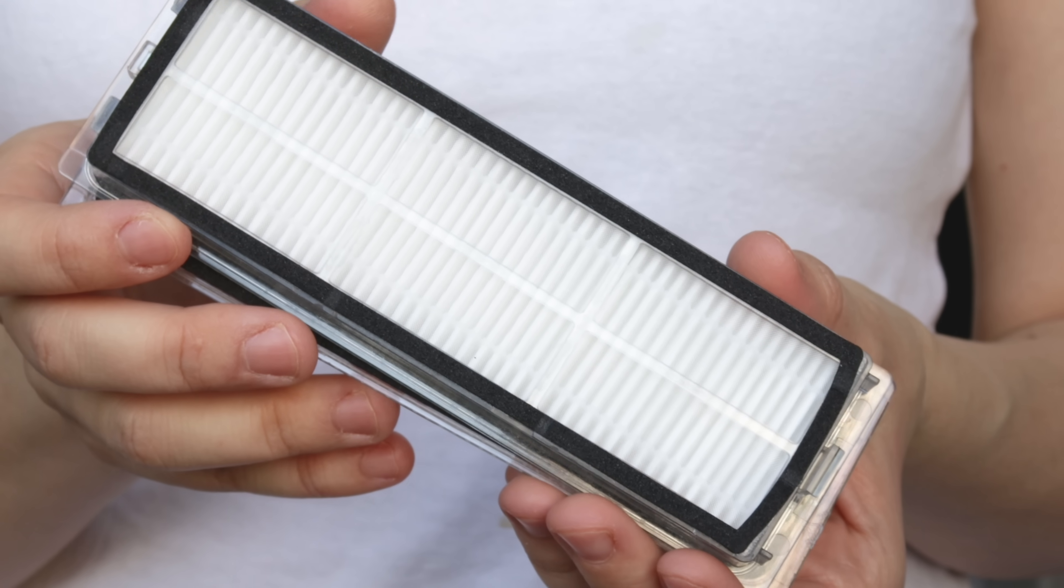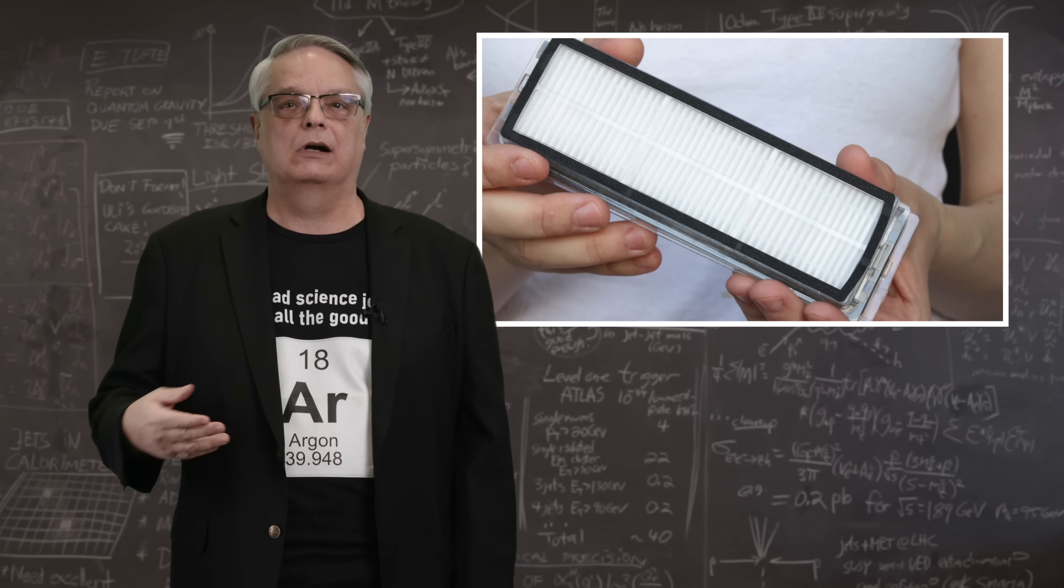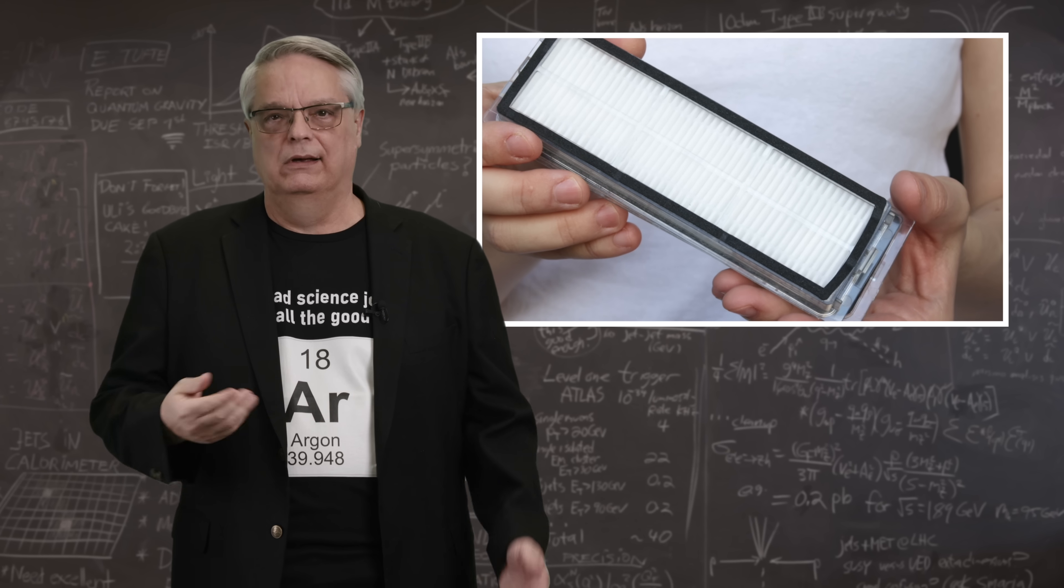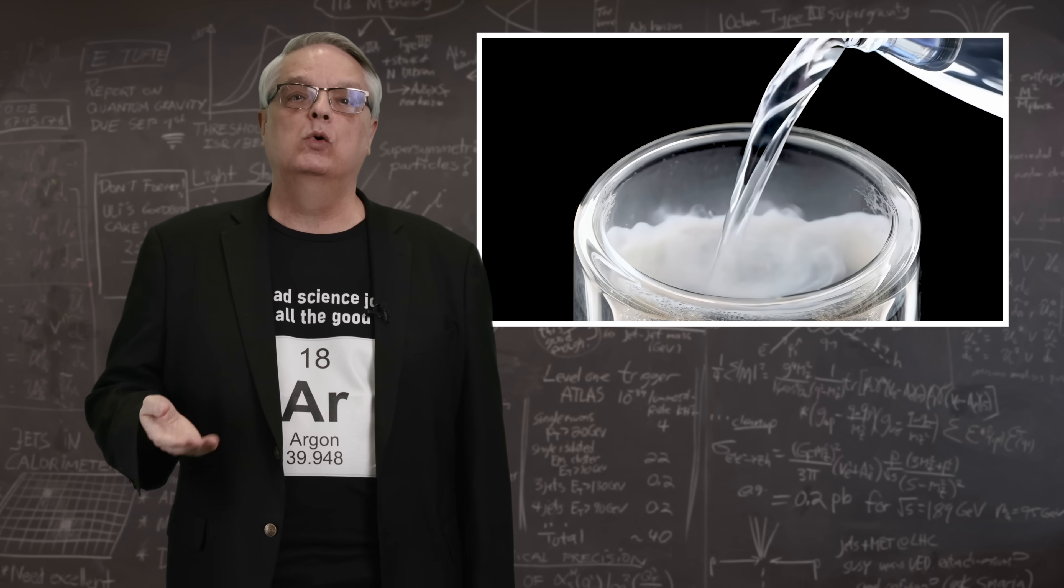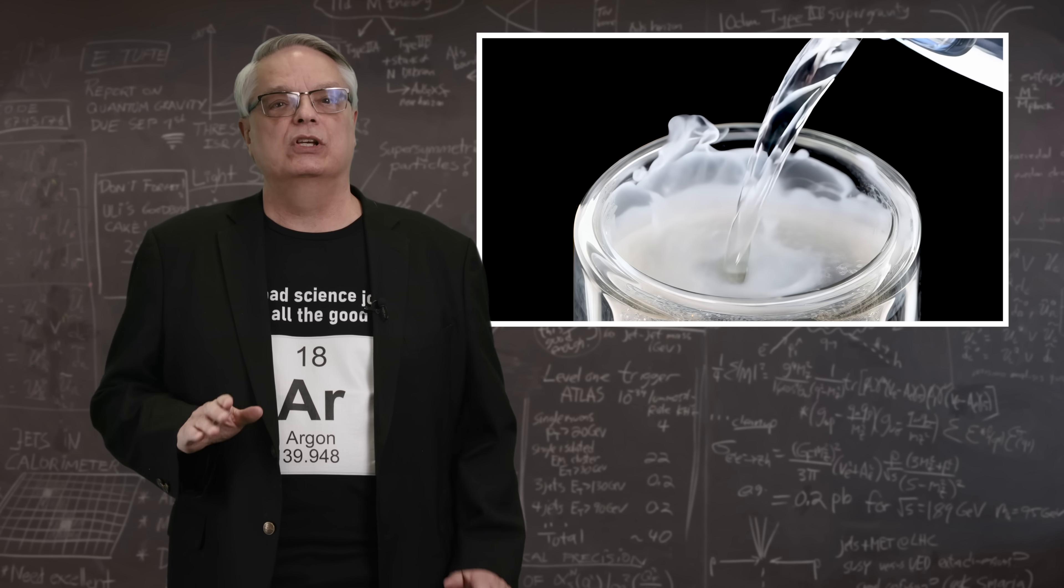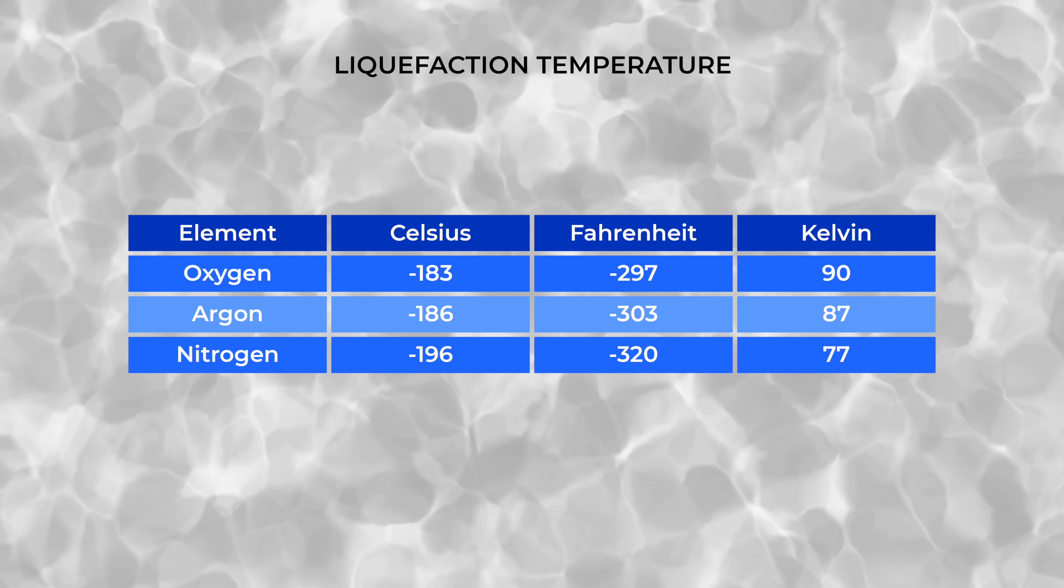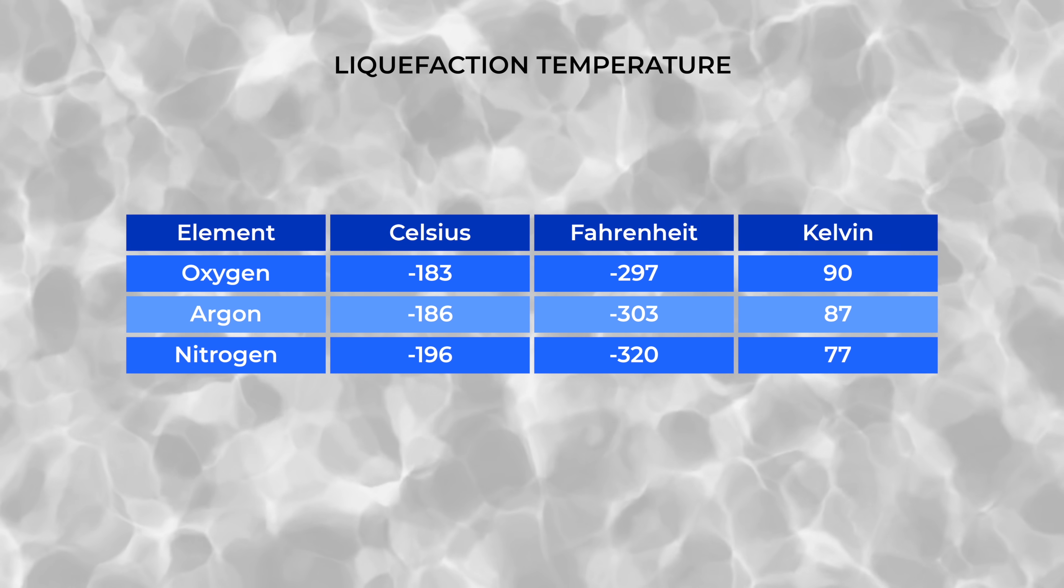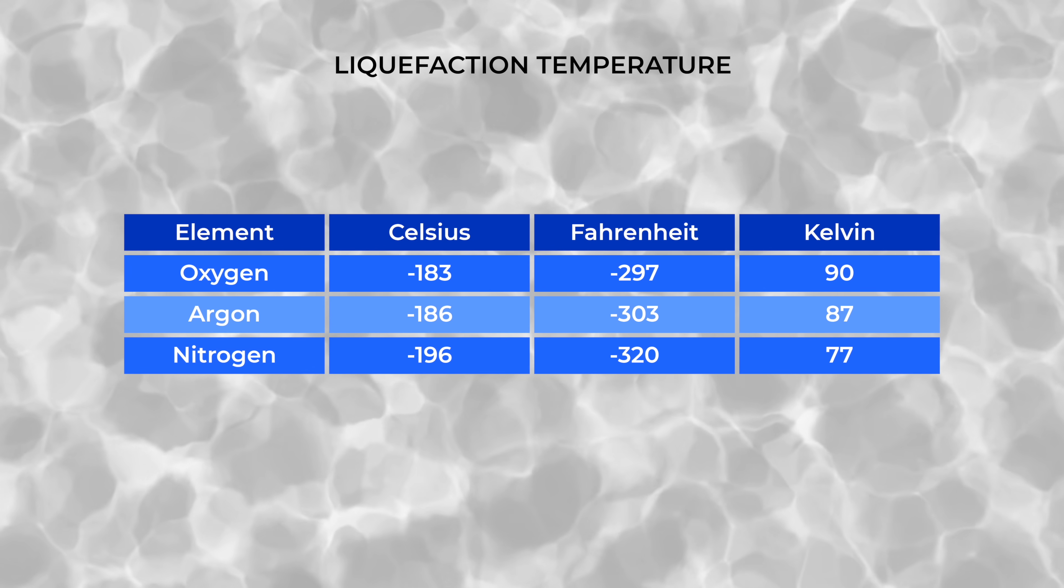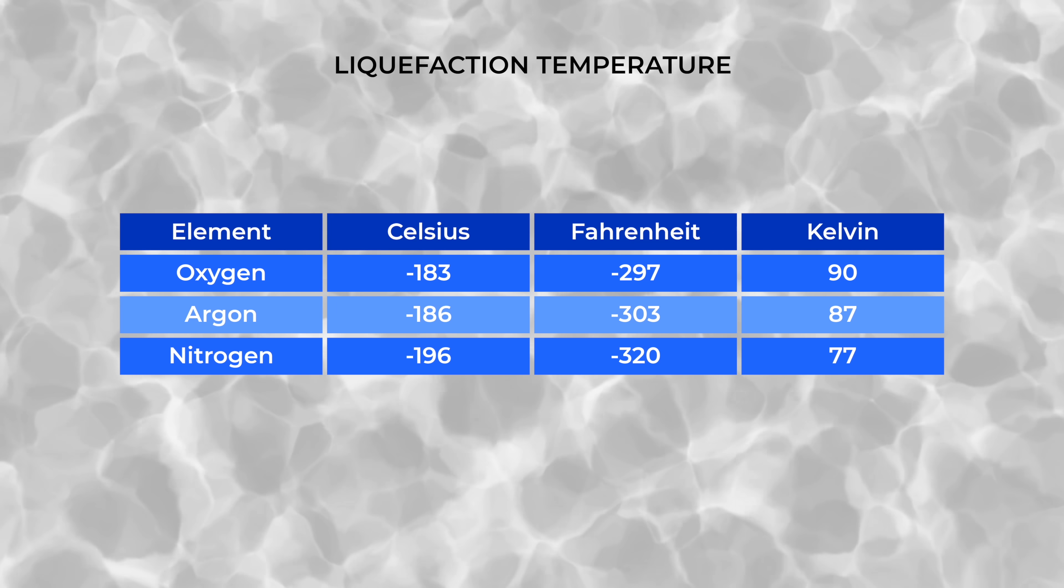To make liquid argon, companies first take air and run it through filters to scrub out the water, carbon dioxide, dust, and other contaminants. They then cool air cold enough that it liquefies. Liquid air looks just like water, although of course it's very cold. Companies then use the properties of nitrogen, oxygen, and argon to separate them out, specifically the fact that each of these materials boils at different temperatures.